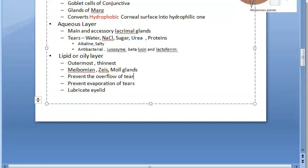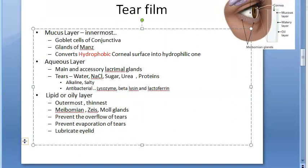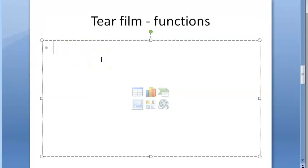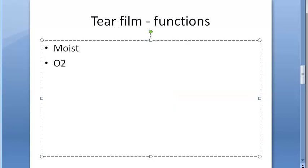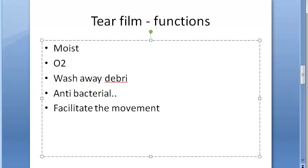Now let us look at the functions of the tear film overall. It keeps the cornea and conjunctiva moist. It provides oxygen to the corneal epithelium. It washes away debris and any noxious irritants. It has antibacterial action to prevent infection. And it facilitates the movement of the eyelids over the globe.